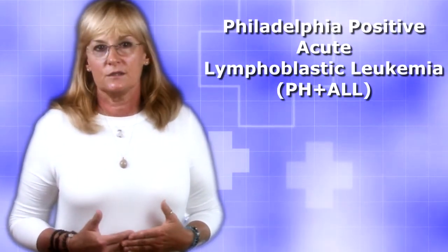What is Philadelphia ALL? Philadelphia positive acute lymphoblastic leukemia is a blood cancer. The Philadelphia gene was first discovered in the 1960s in the city of Philadelphia, which is how it got its name. It is an abnormality between chromosome 9 and chromosome 22.